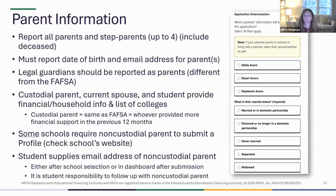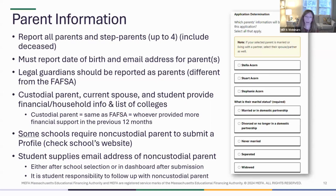On the profile, you're going to list parent information, and you're actually going to report all parents of the student. So that includes biological, adoptive parents, and then any step parents. So there might be up to four. If there's a divorce situation and both parents are remarried, you might be listing four parents. Even if a parent has passed away, go ahead and list that parent, and you'll have the option to indicate that that parent has passed away. For every parent, you're going to have to list a date of birth and an email address, so make sure you have all of that before you begin.